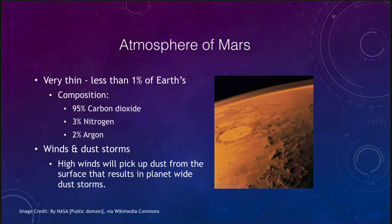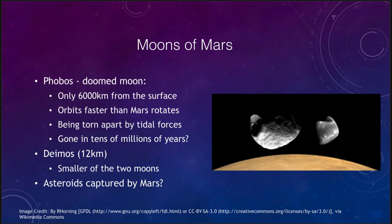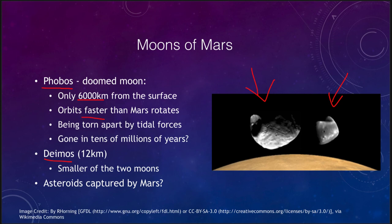The last thing we want to look at are the moons of Mars. We didn't have any moons to talk about with Mercury or Venus because they don't have any, but Mars does have two small moons. We have Phobos, which is the doomed moon, seen here on the left, and Deimos, the other moon of Mars, on the right. Phobos is only about 6,000 kilometers from the surface — very close — so close that it orbits faster than Mars rotates, meaning it moves through the sky and rises in the west and sets in the east.